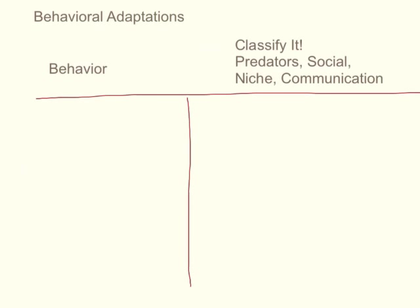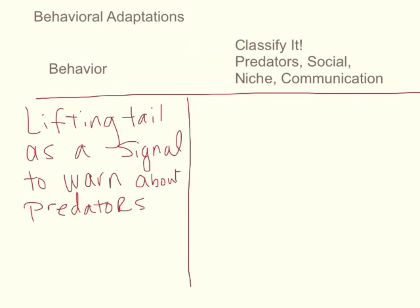This table is designed to help you classify behavioral adaptations of an animal. It has two columns, allowing you to think about the behavior and specifically classify it in relationship to what type of behavior it is. For example, the white-tailed deer lifting its tail to warn about predators can fit under two types of classifications: it fits under communication, and it also fits under social behavior.